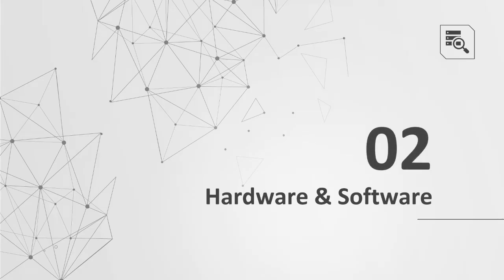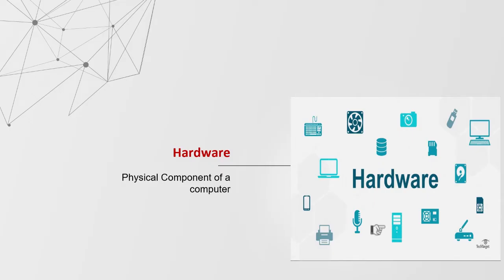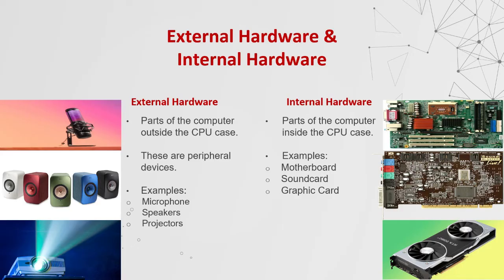Hardware and software. Hardware is a physical component of a computer. There are two types of hardware: external and internal hardware. External hardware are the parts of the computer outside the CPU — these are peripheral devices, for example microphones, speakers and projectors. Internal hardware are parts of the computer inside the CPU case, for example motherboard, sound card and graphic cards.